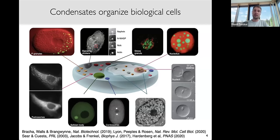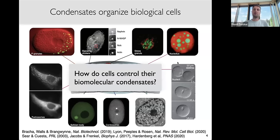Phase separation is an inherent property of these systems, and cells need to spatially organize their molecules, so it makes sense to combine these and exploit phase separation to form condensates. The challenge and question becomes how cells can control phase separation — what physical processes can be used to control how large droplets get, where they form, and how they move around.